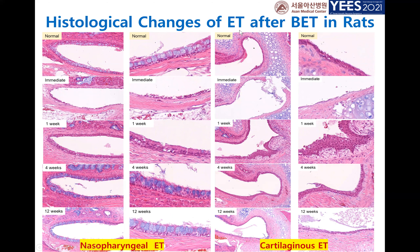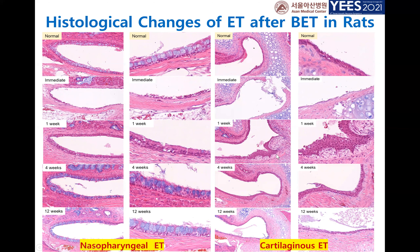Regarding the cartilaginous eustachian tube: this is the cartilage — there is no cartilage here but there is cartilage here, showing the cartilaginous portion. Immediately after balloon dilation, the cartilage was fractured and the mucosa, submucosa, and all areas were damaged. However, one week later there was proliferation of submucosal fibrous tissue and hyperplasia of the epithelium. Three months later, the epithelium was nearly normalized, though with a slightly thicker submucosal fibrosis.